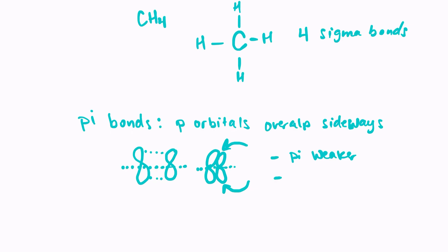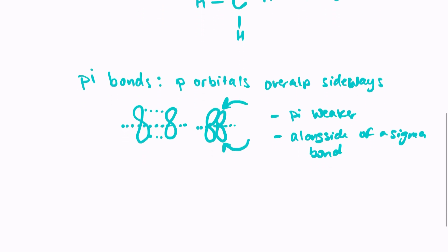Pi bonds will actually form alongside a sigma bond — you would never have a pi bond by itself. It will always be with a sigma bond. That means pi bonds are only found in double and triple bonds.